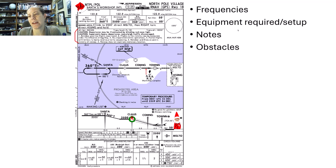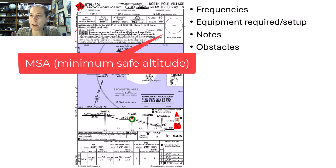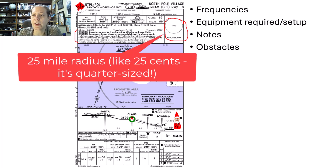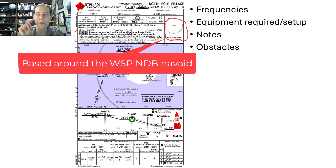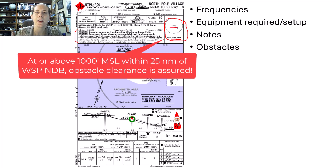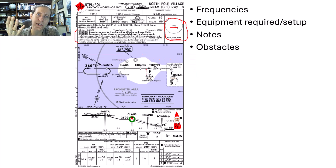The next section off to the side is our minimum safe altitude. Jeppesen doesn't tell you the radius on the chart, but I often tell my students to think of it like the size of a quarter — 25 cents — because that's a 25-mile radius. It is based on the WSP NDB, so within a 25-mile radius of that NDB, at 1,000 feet I will clear my required obstacle clearance. That's just good for awareness of where I should be in the general area as I approach the airport.